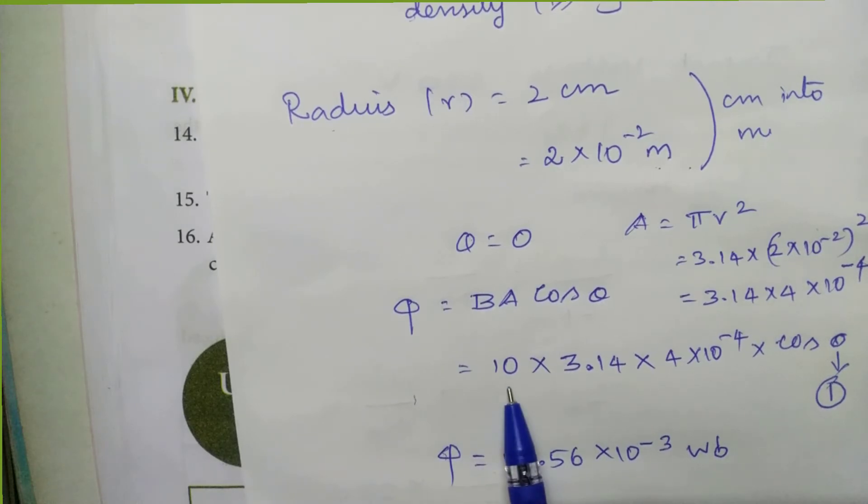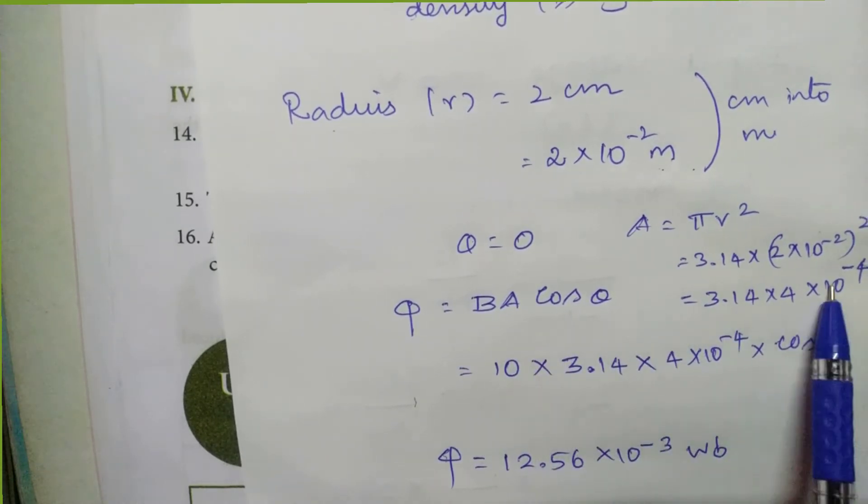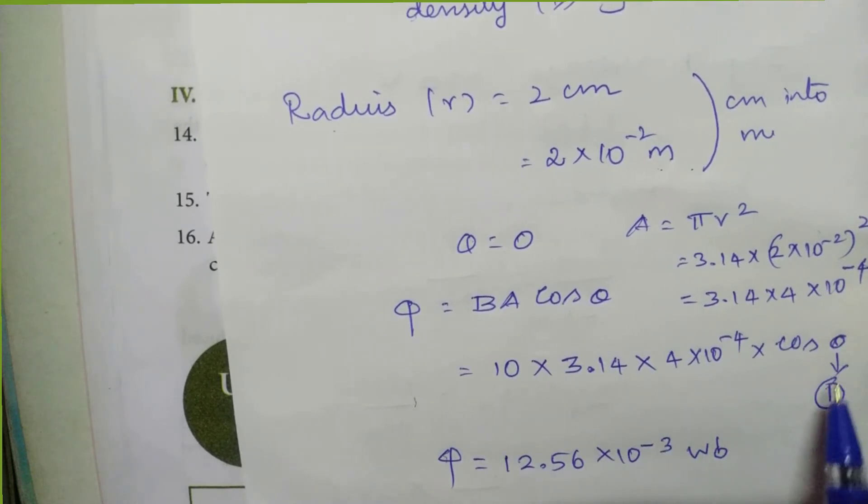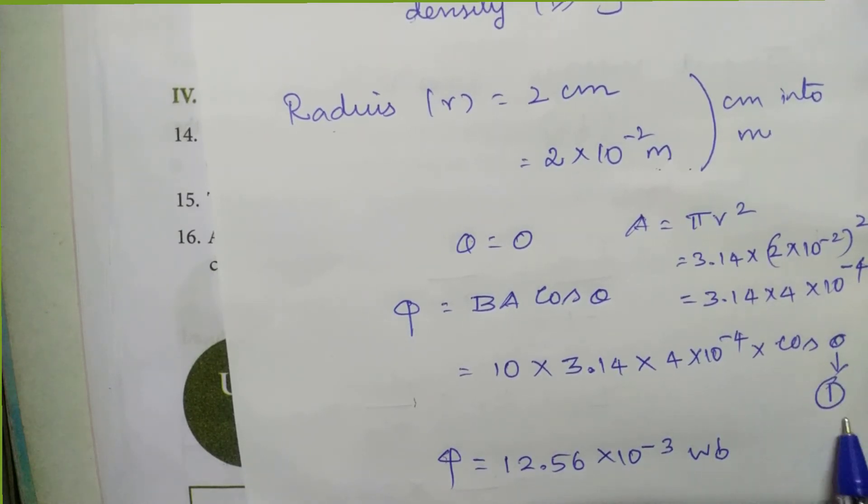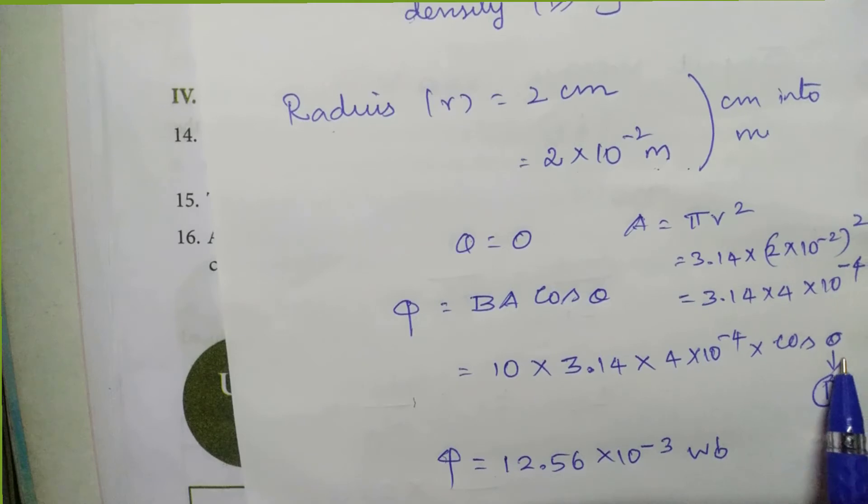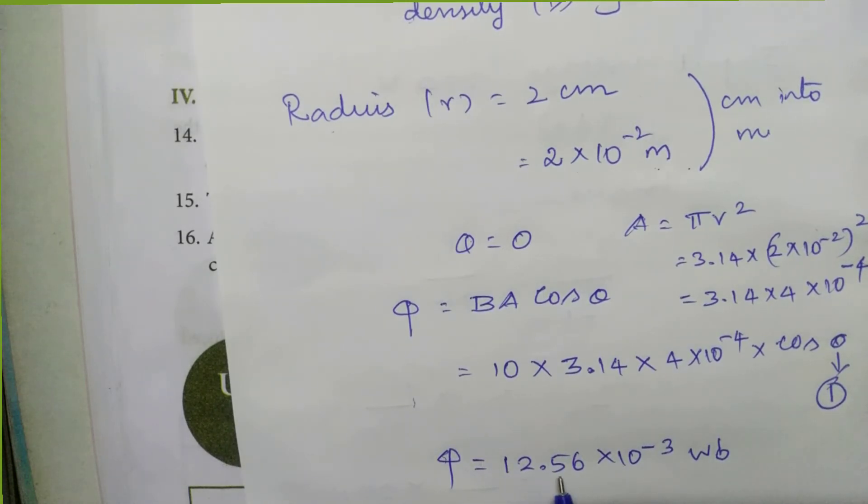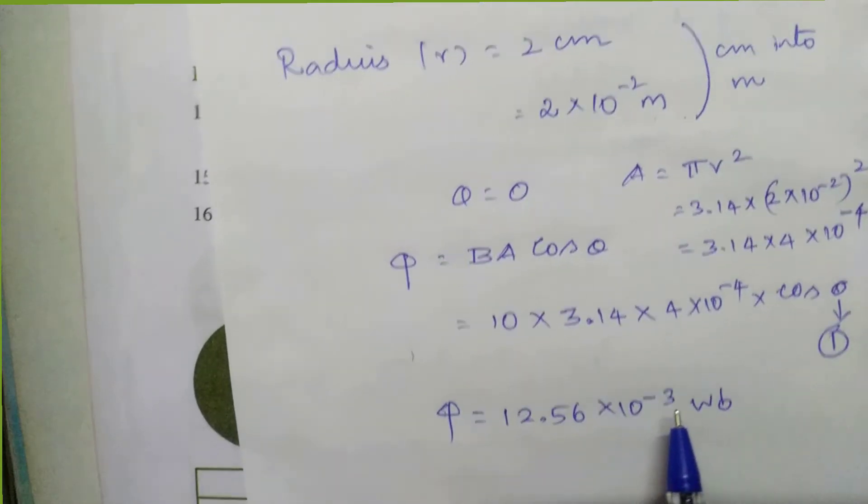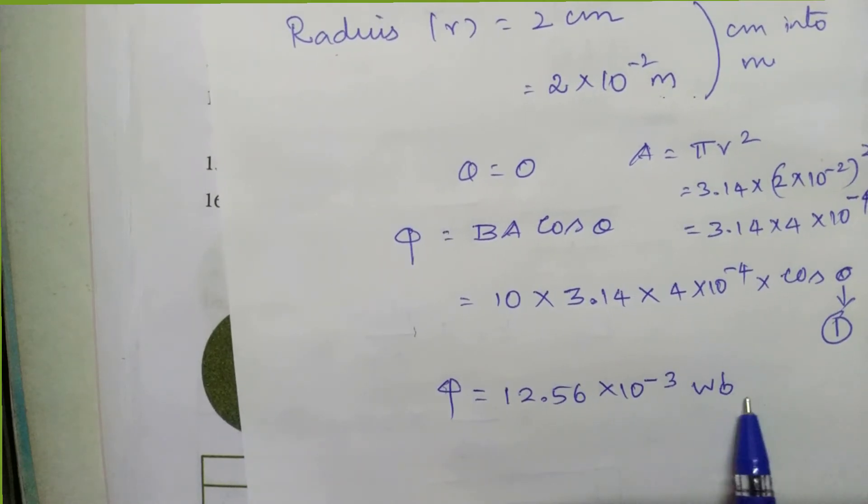Then Φ is equal to B into A cos θ. The value of B is 10. Substitute the value for A, and then cos θ. Here θ is equal to 0, so this value is 1. Then multiply all those things. Then you will get Φ is equal to 12.56 into 10 to the power of minus 3 Weber.